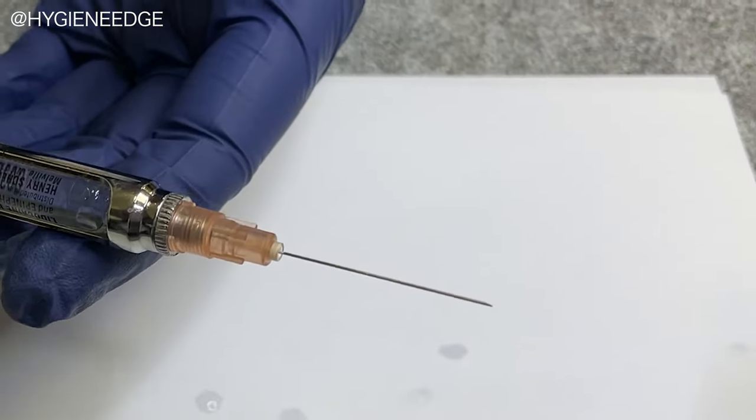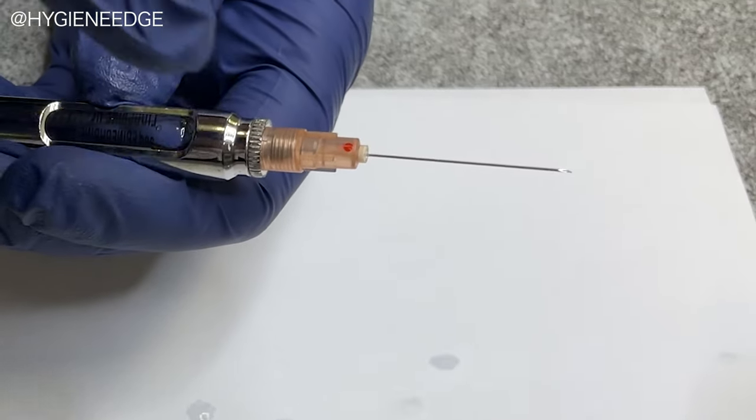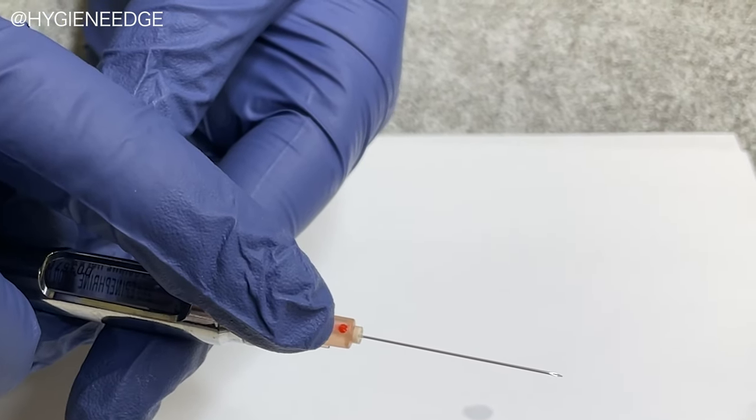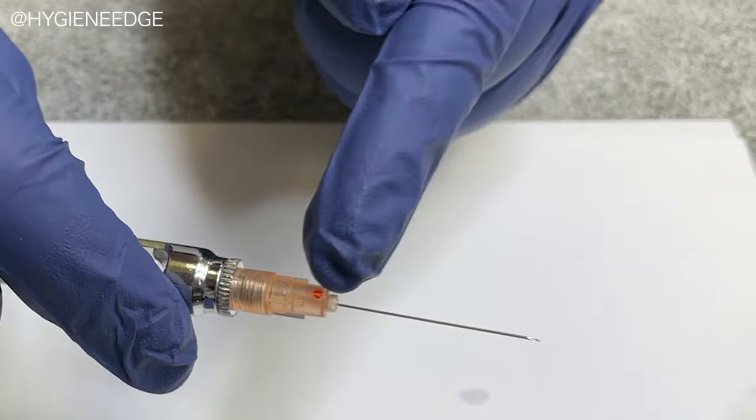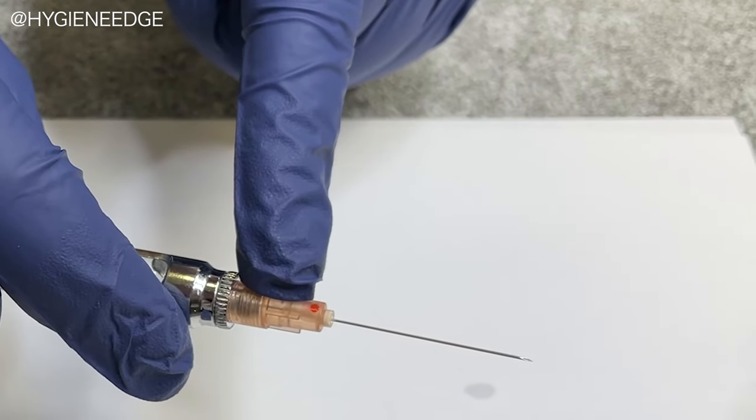One little helpful thing to know where the bevel is, depends on the brand. But if you look at your needle, it'll have a little mark. And the bevel, the opening, is lined up with that mark on the hub.